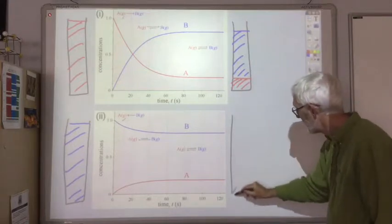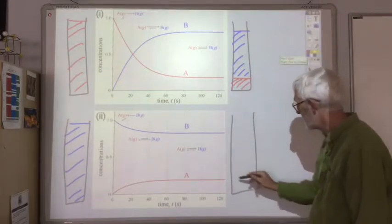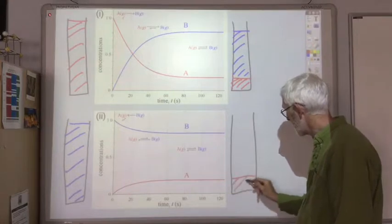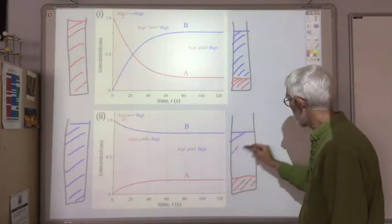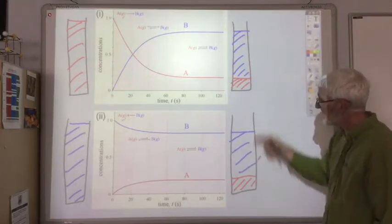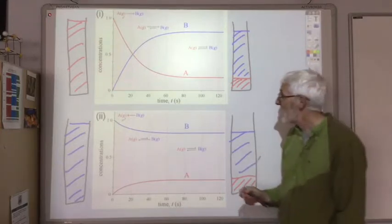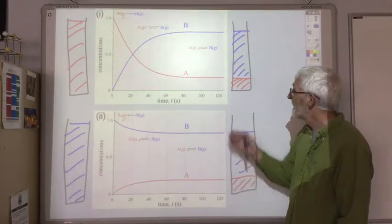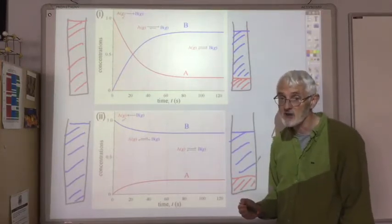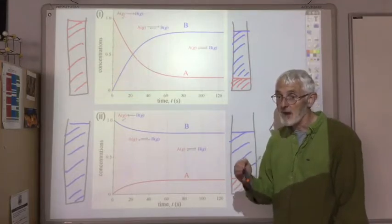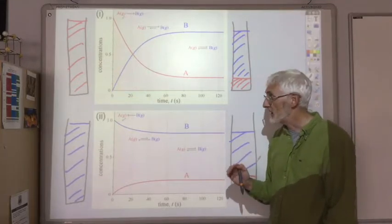What we find after we leave it for a certain period of time for equilibrium to be reached. That equilibrium is the exact same in both cases. End up with the same concentration of A and B no matter where we start from. And that goes for all reversible reactions.